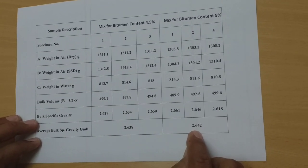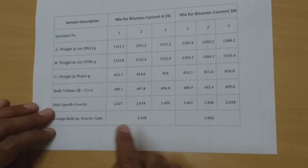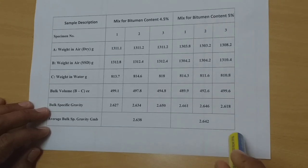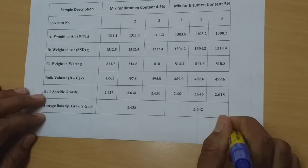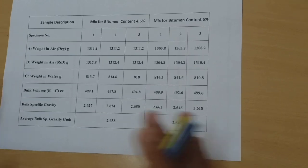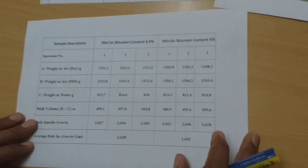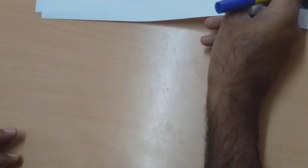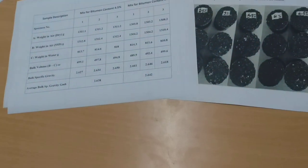I have used bitumen content values from 2.5% up to 5%, and at each bitumen content I have calculated the specific gravity. That concludes the description of specific gravity calculation. In the next video, we will do the analysis of Marshall stability and flow value.